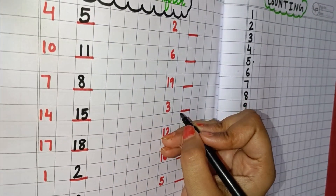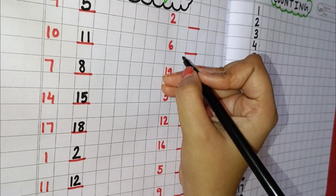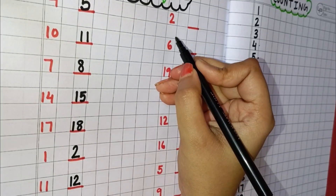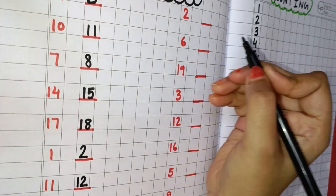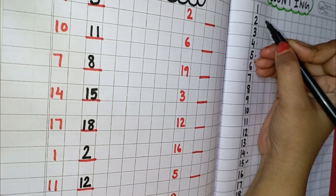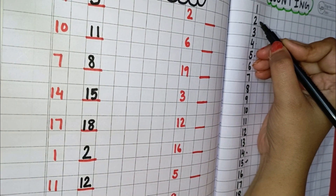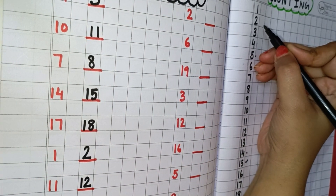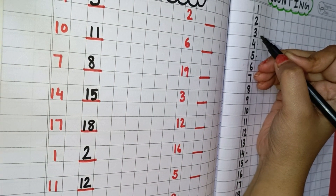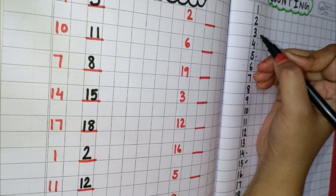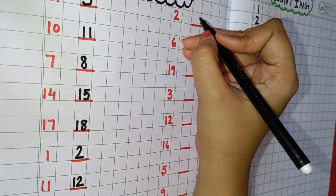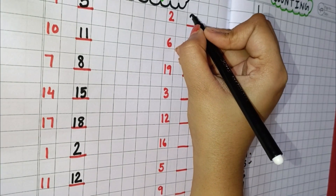Now, come to the next number. This number is 2. You can see this is 2, children. And 3 is the number which comes after 2. So, you will write here 3.